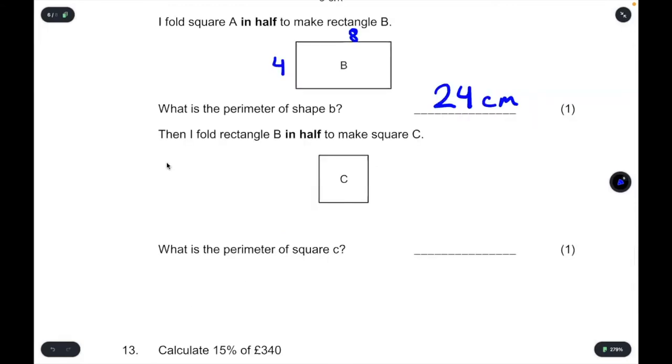On to the next part. Then I fold rectangle B in half to make square C. So that means this is remaining the same. This is still four, but what used to be eight across here is now being halved. So this eight turns into four and to find the perimeter of this, it's just four and four and four and four or four times four, which is 16. This is a square number. Of course, the units again will be in centimetres.